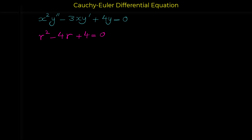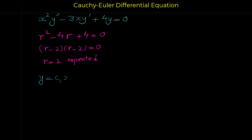Note that we can factor this characteristic equation as (r minus 2)(r minus 2) equals zero. Setting each bracket to zero gives r equals 2, and this is a repeated root because both brackets give r equals 2. When we have a repeated root, the formula for the Cauchy-Euler solution is c1 x to that root plus c2 x to the root times ln x. Here r is 2, so y equals c1 x squared plus c2 x squared ln x.